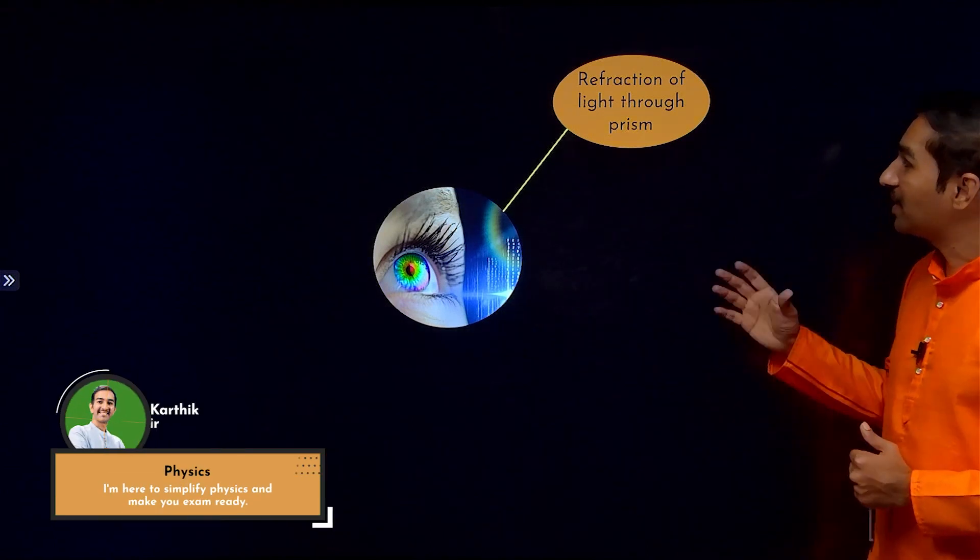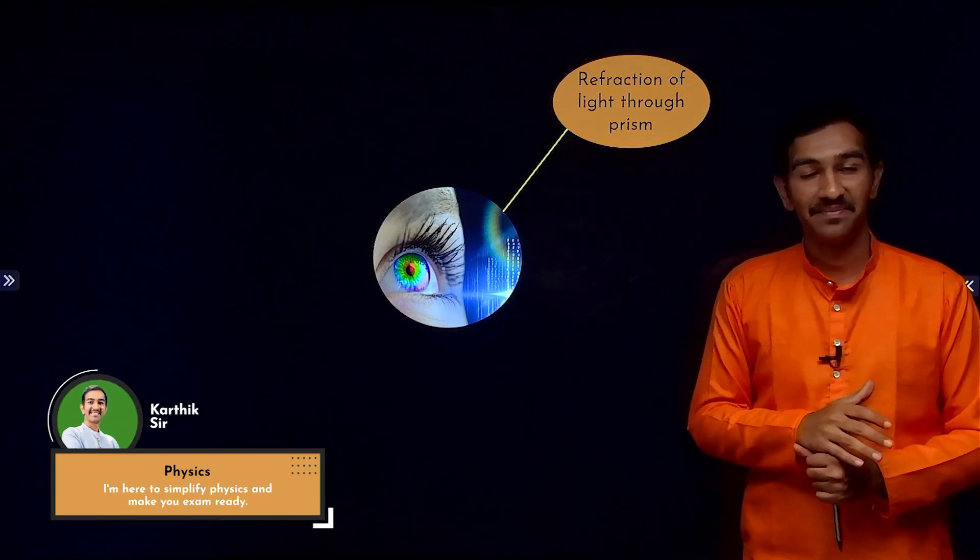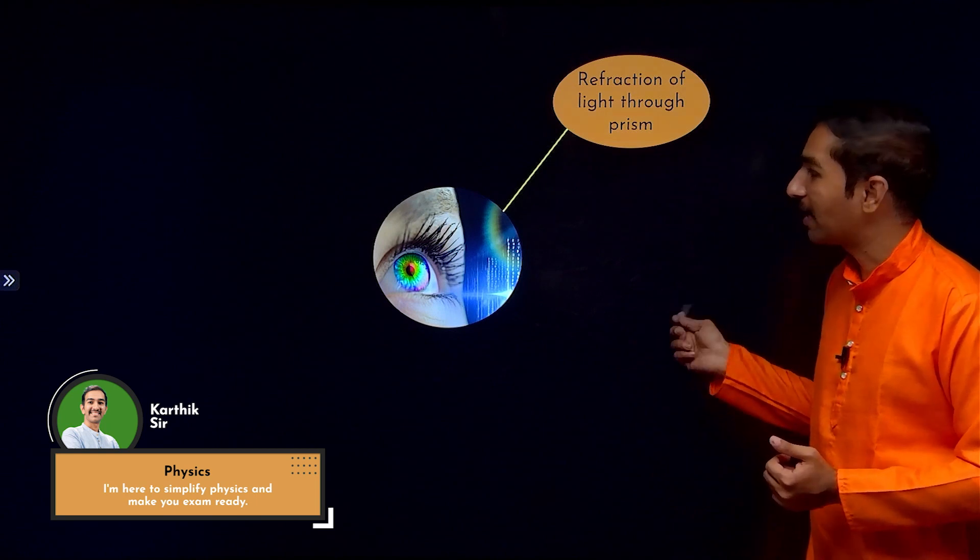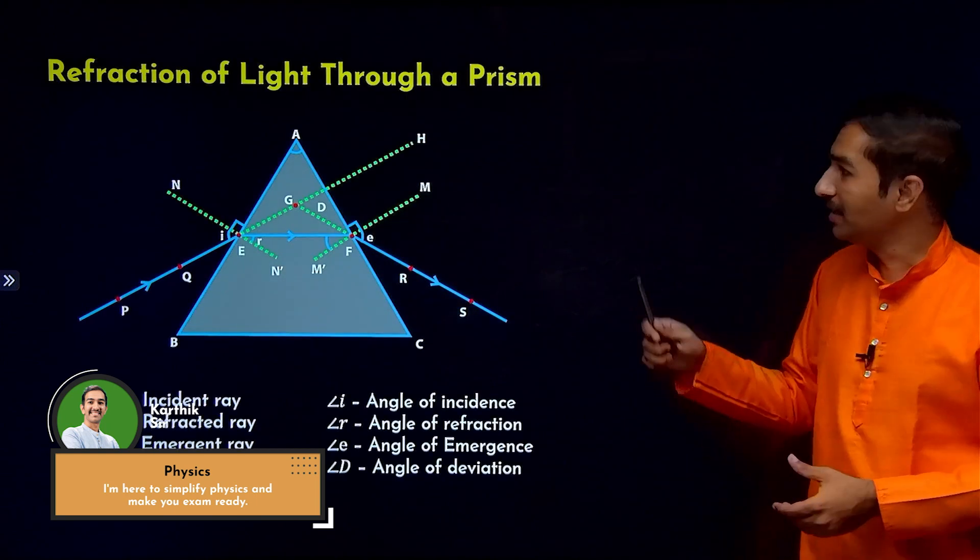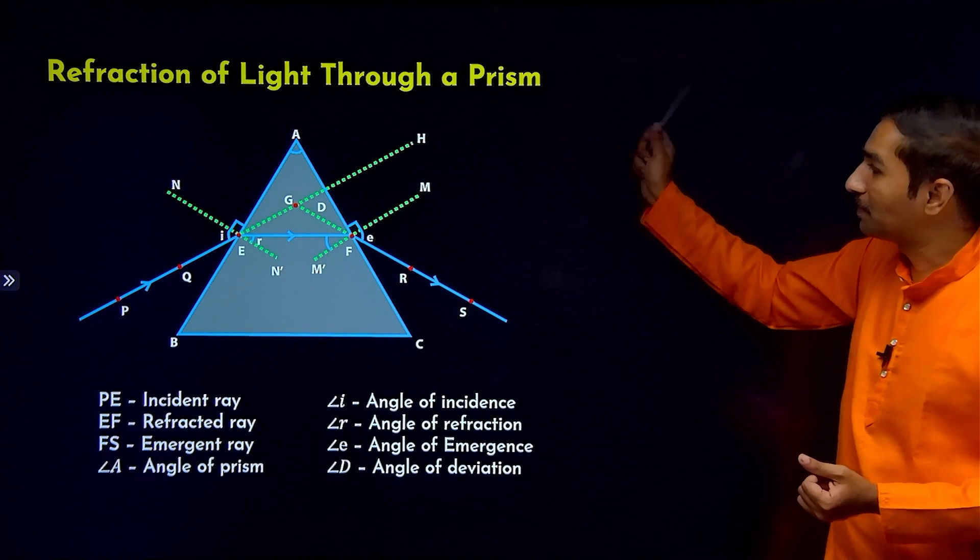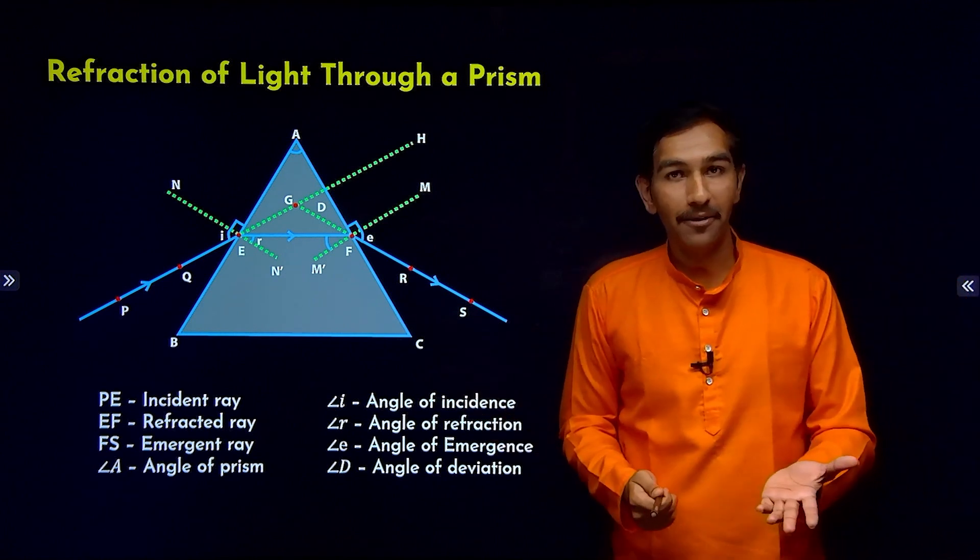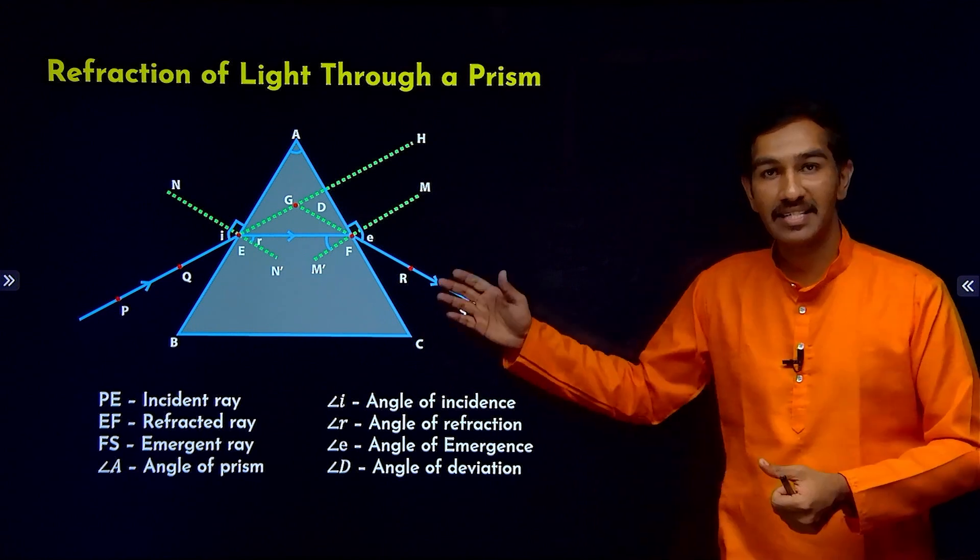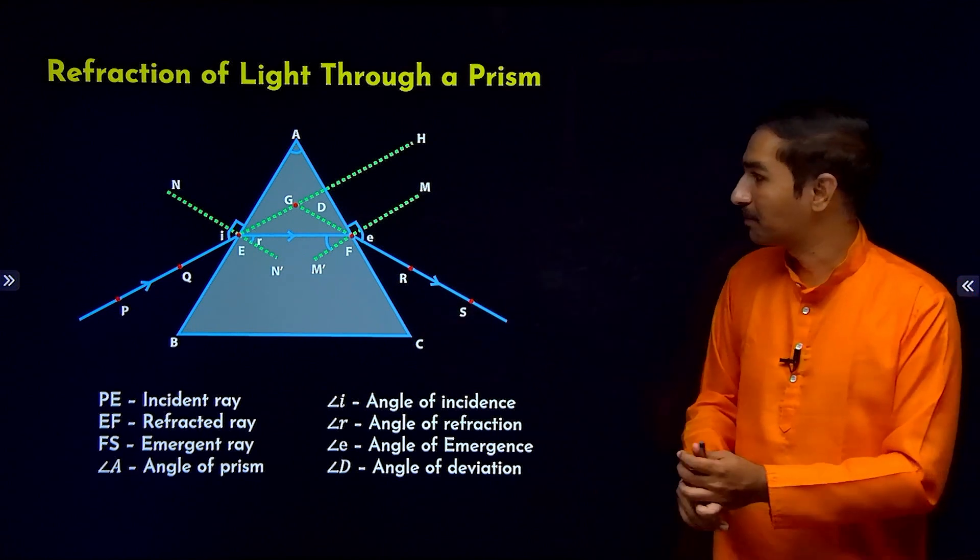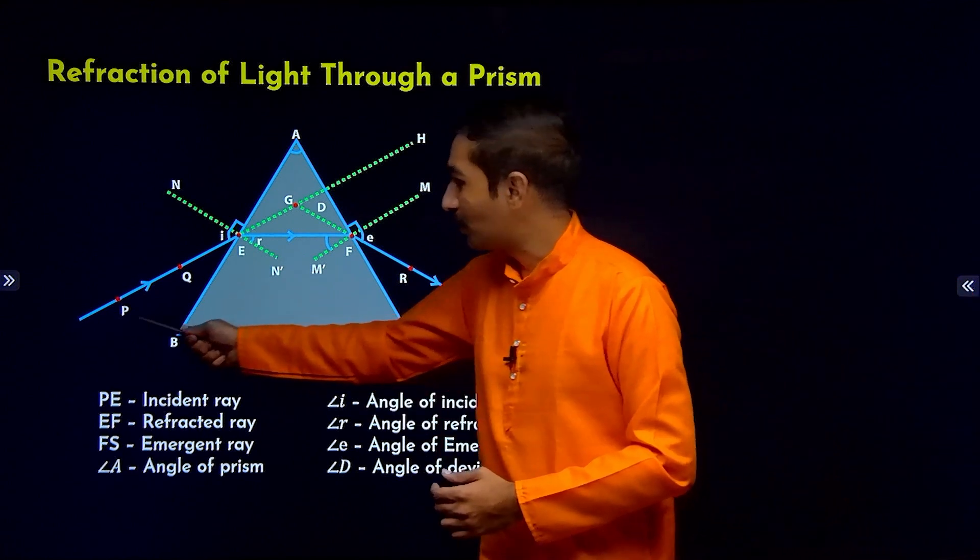Next topic is refraction of light through prism. So we'll see how light passes through a prism. Refraction of light through prism - the prism is made up of glass, so glass is again a denser medium.